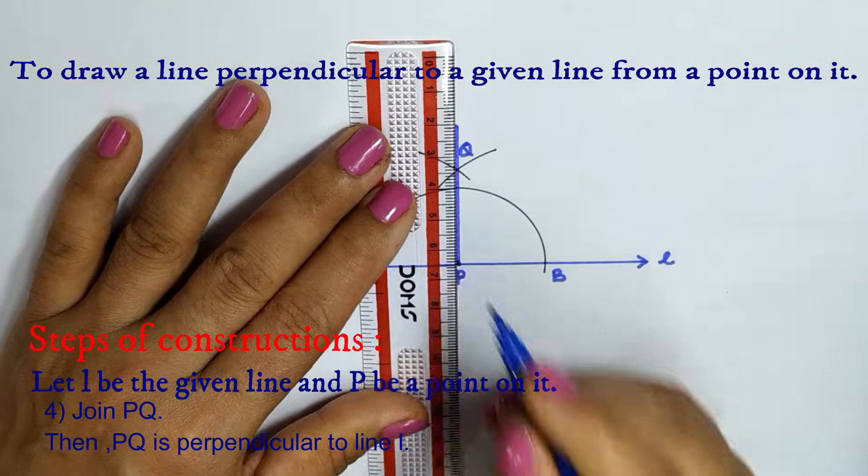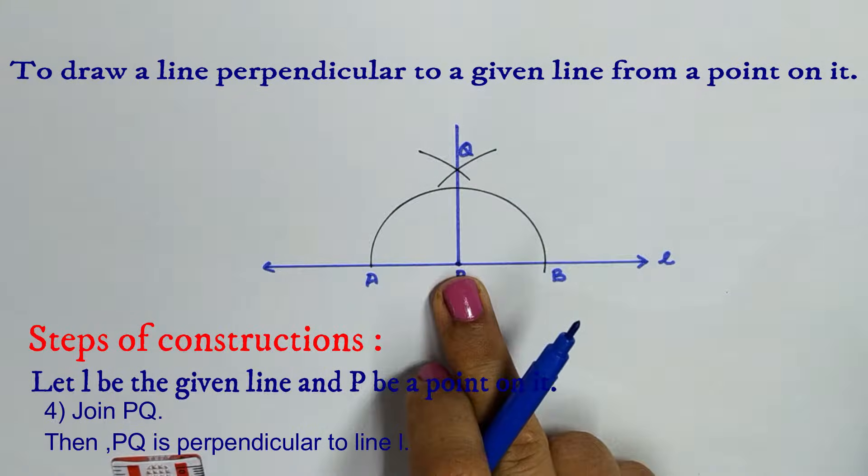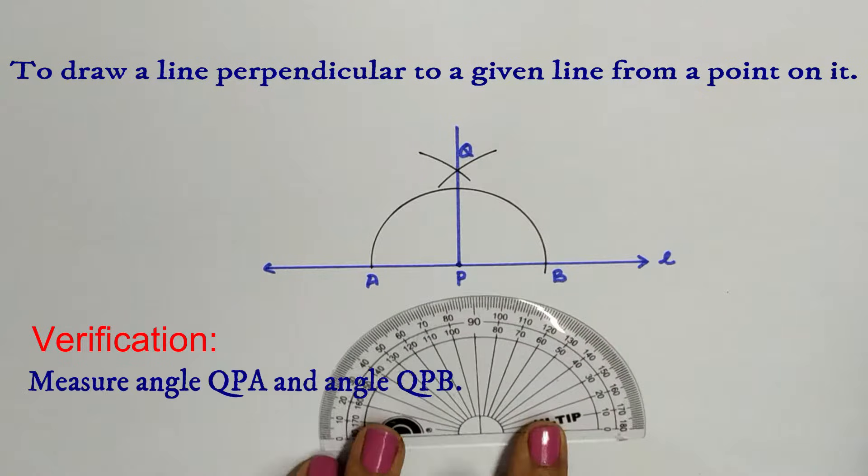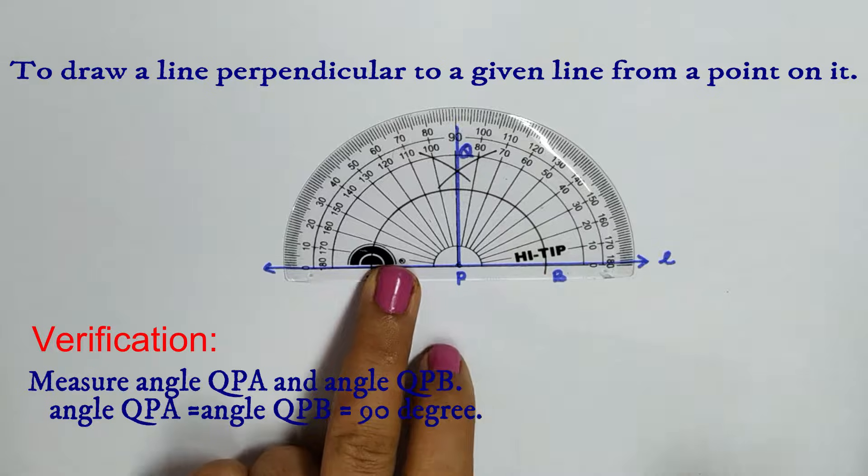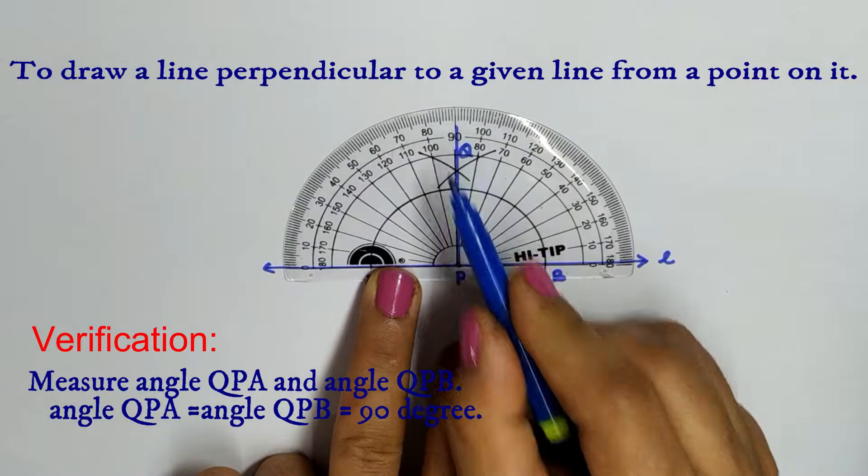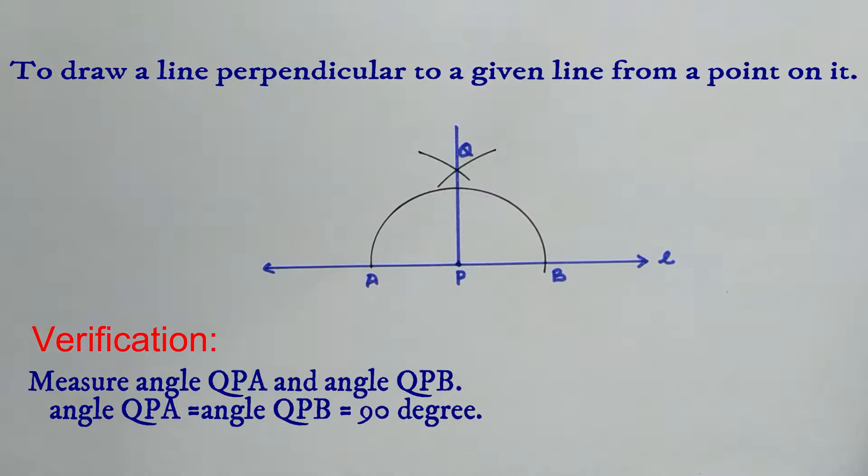PQ is the required perpendicular from point P on line L. Let us now verify. Angle QPB and QPA equals 90 degrees.